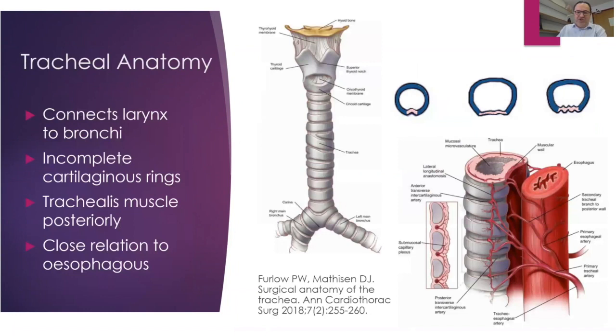The trachea is simpler — a cylindrical organ where the anterior two-thirds consists of cartilage rings and posteriorly there is the trachealis muscle, whose contraction changes the dimensions of the trachea and thus airflow. It has a close relationship with the esophagus, so during percutaneous tracheostomy or emergency airway procedures, care must be taken not to damage the posterior wall or you will end up with a fistula.